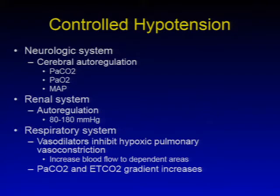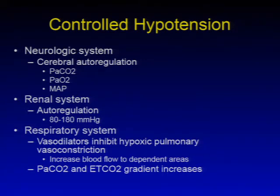With controlled hypotension in the neurologic system, the focus is on cerebral autoregulation, which has been talked about in a previous presentation. This involves the autoregulation of the PaCO2, the PaO2, and the mean arterial blood pressure.